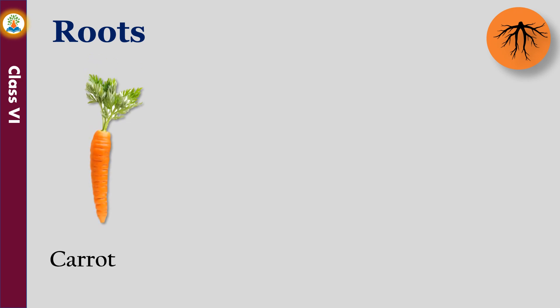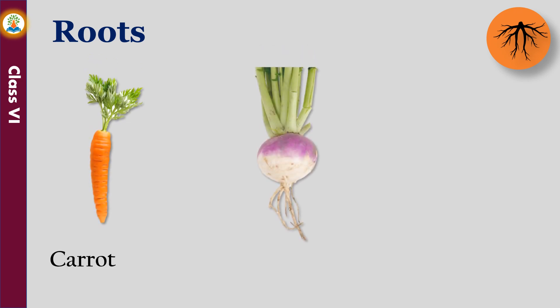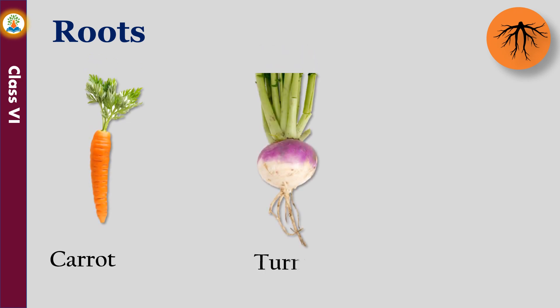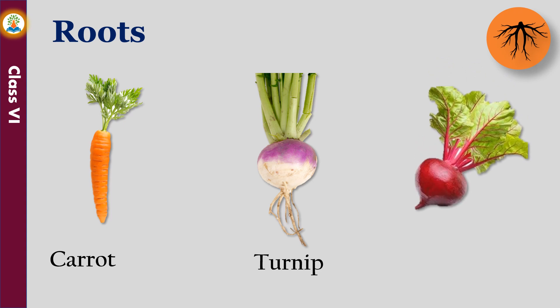Carrot, turnip, and beetroot are edible roots of plants. The food is stored in the roots of these plants, which we eat.